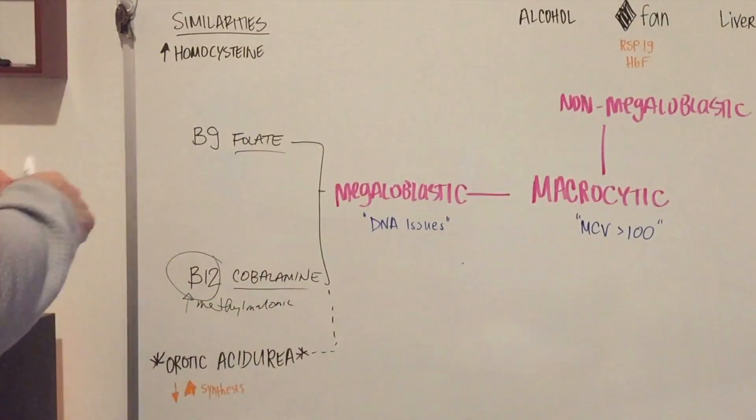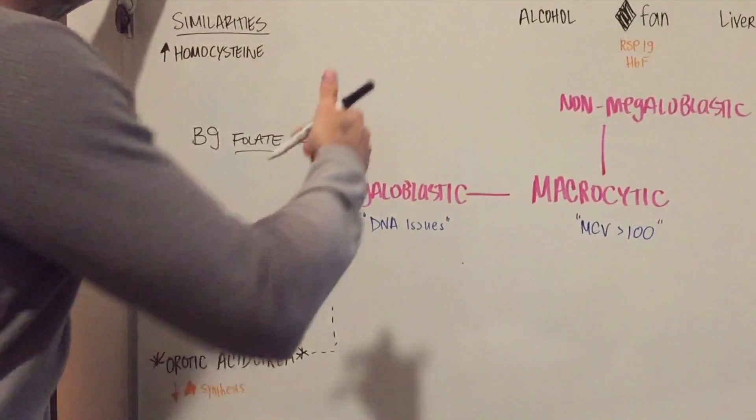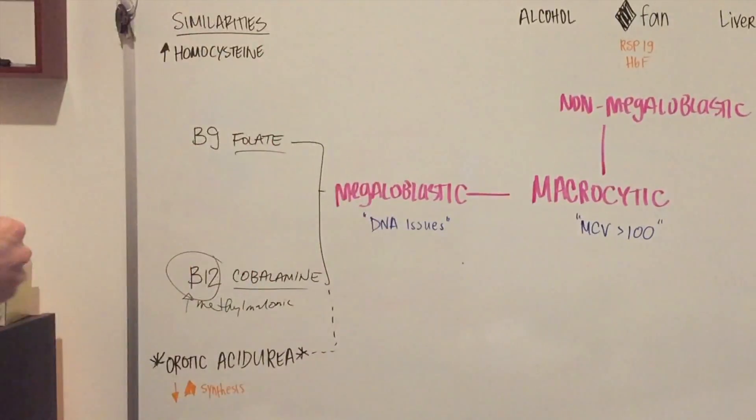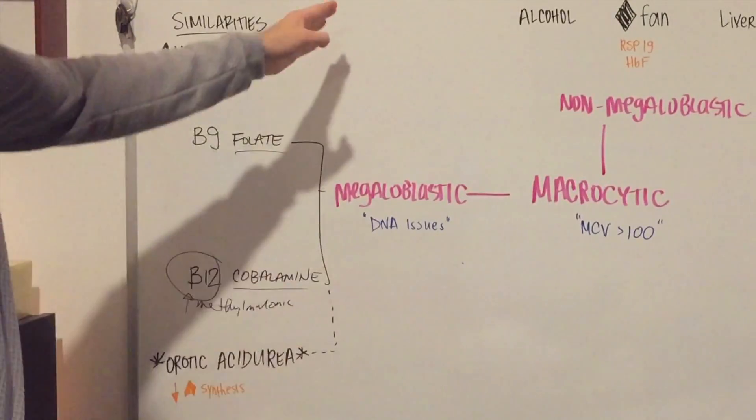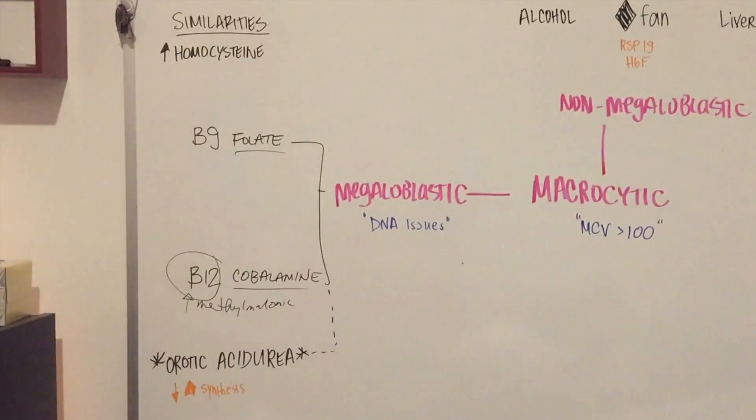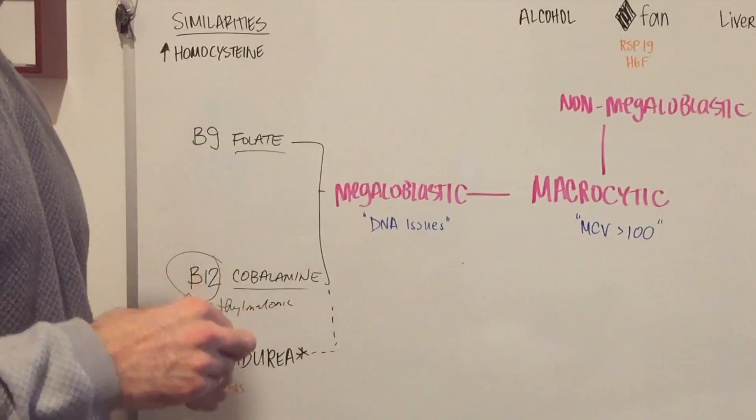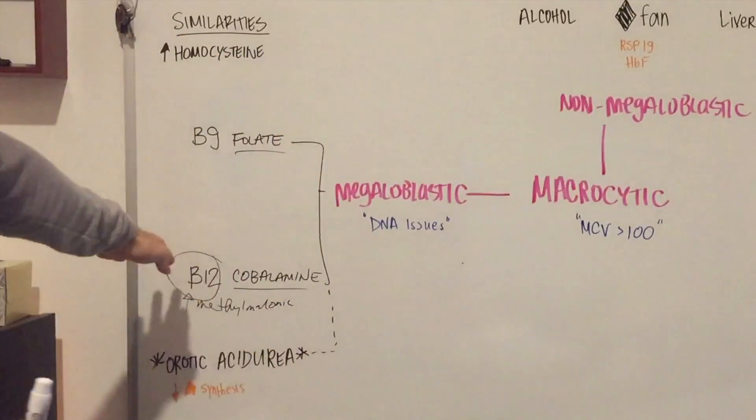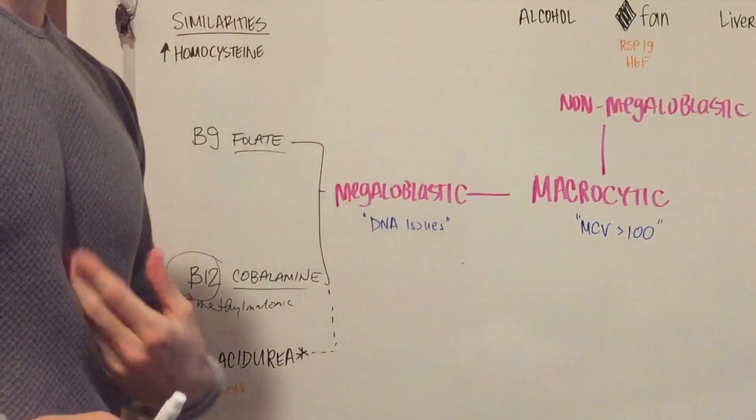So it's important to now understand how we get B12 into our system. And so the first thing is you're going to ingest B12, or food that contains B12. And you're going to have, initially, through your saliva, you're going to have R binder. And R binder is going to bind to your B12, and it's going to go down your esophagus and your stomach.